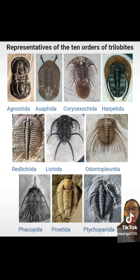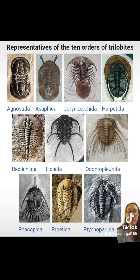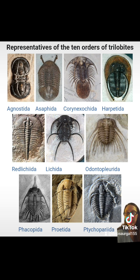Trilobites are found on all modern continents and occupied all paleo oceans and seas. There are thousands of known species. And because they appeared and disappeared quickly and left behind hundreds of molts, they make excellent index fossils to help us relatively date rocks. This photograph shows representations of ten orders of trilobites, just to give you an idea of how big this group really is — ten orders broken up into around five hundred genera, which are then broken up into thousands of species. There are a lot of trilobites.